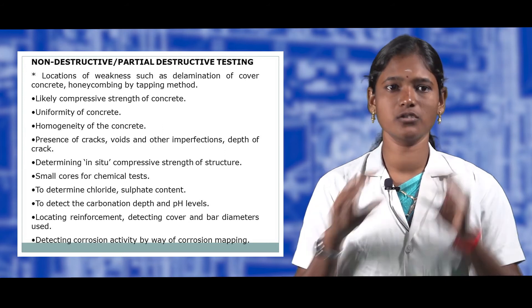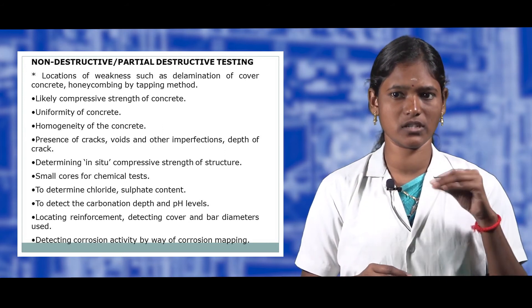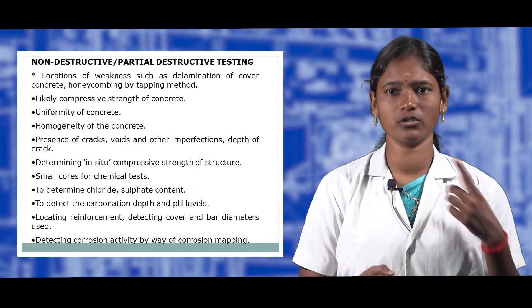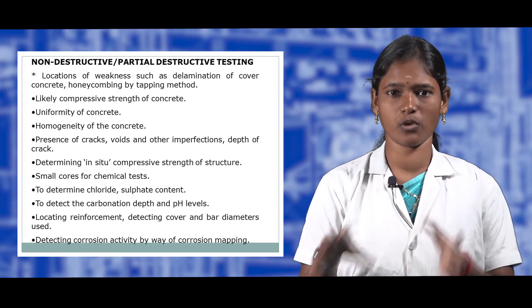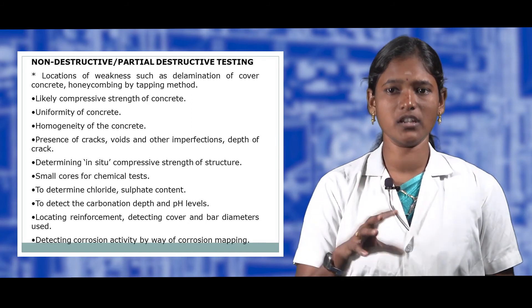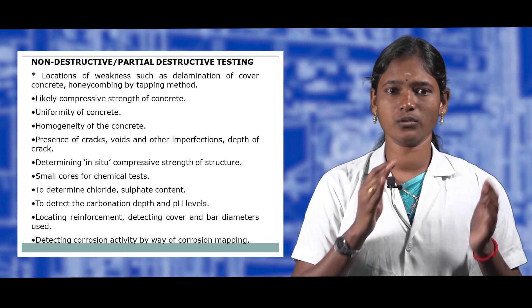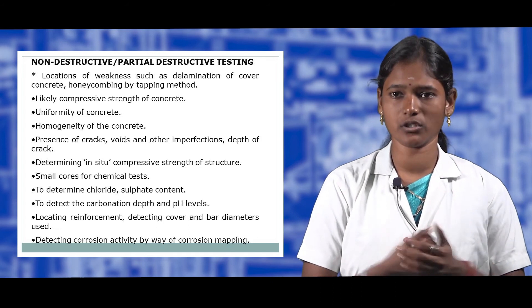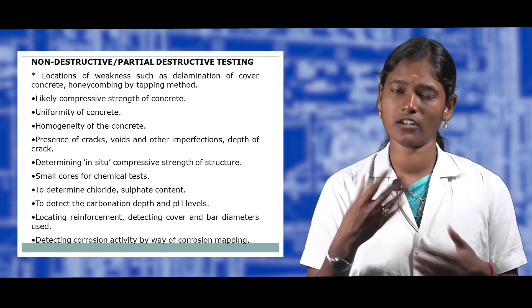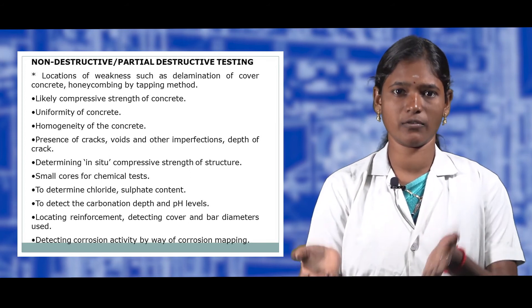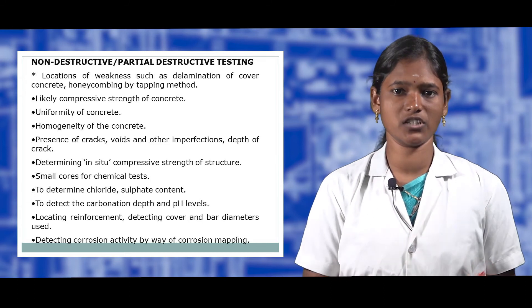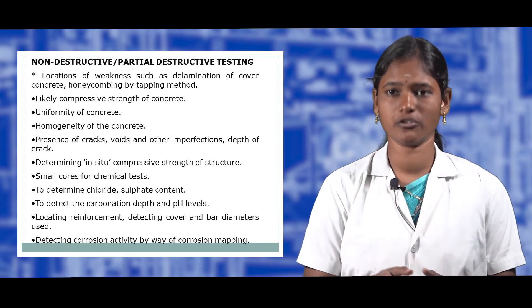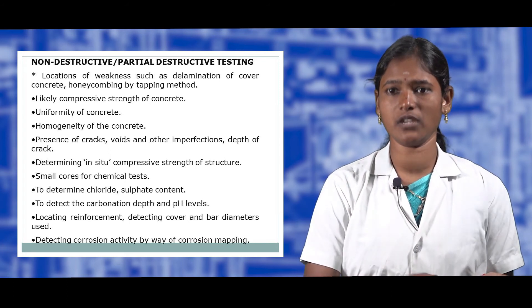After visual inspection, non-destructive testing is conducted at locations of identified weakness. NDT covers compressive strength, uniformity, homogeneity, presence of cracks, voids, and deflection depth of the concrete. The in-situ compressive strength is determined, and chemical tests can be carried out to determine chloride and sulfide content. Carbonation depth and crack depth should also be detected, reinforcement located and bar diameters identified, and corrosion activity detected and mapped.